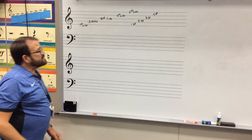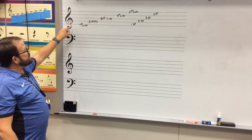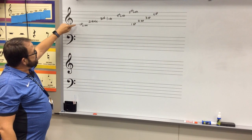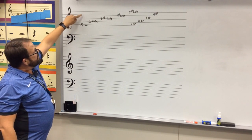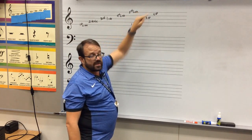Okay, so you should be able to identify the lines and spaces on the treble clef very easily by just counting them up. If you're going lines, it's first, second, third, fourth, fifth line. Spaces are first space, second space, third space, fourth space.